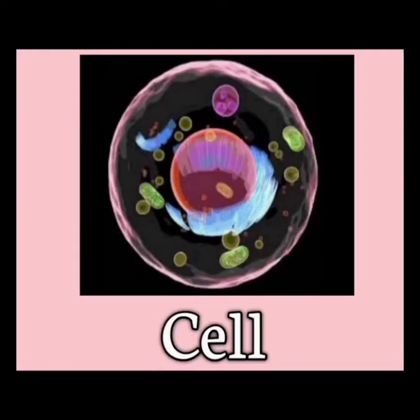Cell. The word cell is a Latin word which means small room. It was first discovered by Robert Hooke in 1665. A cell is defined as the smallest unit of an organism with a nucleus.